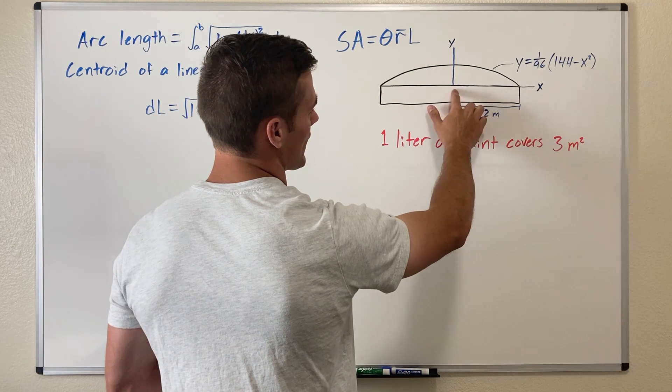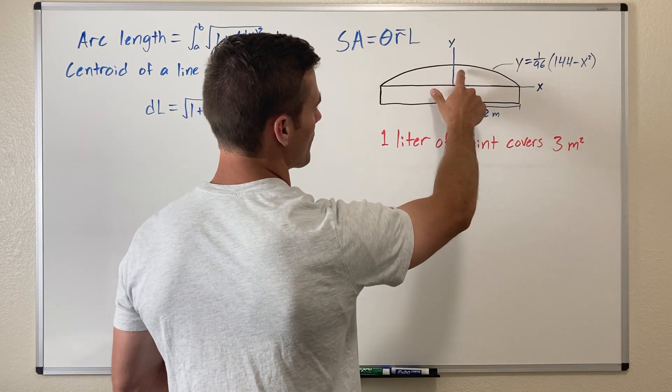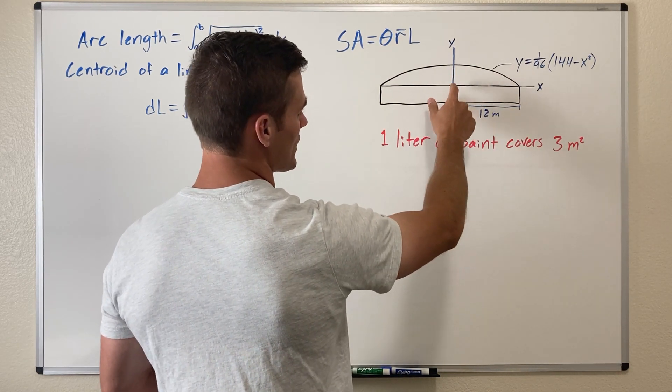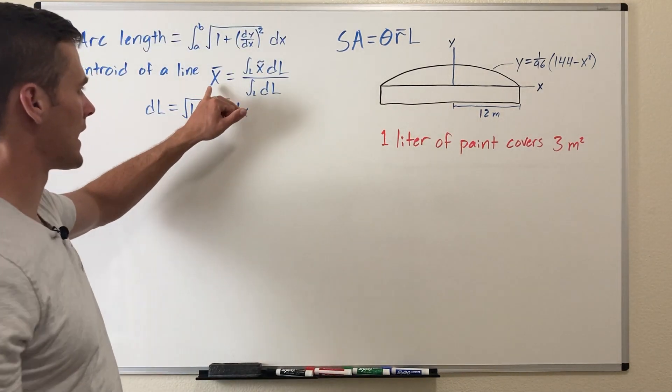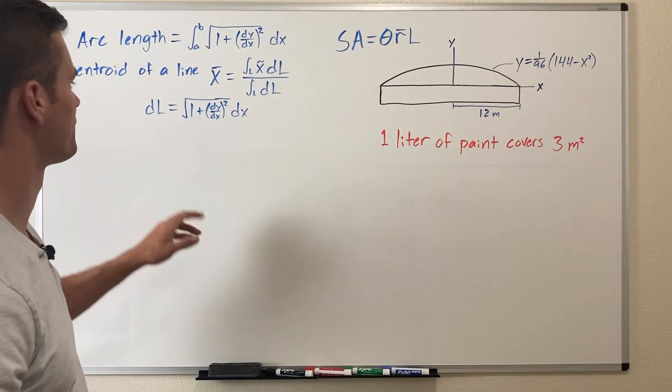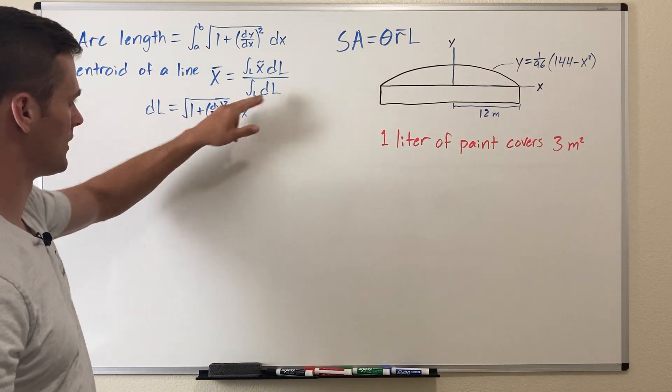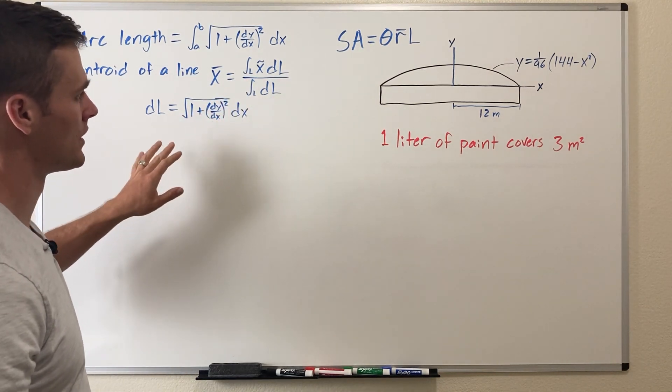The x coordinate is going to be the distance away from the y axis which is our axis of rotation. So in this case x bar equals r bar and then we have dL as part of this equation.